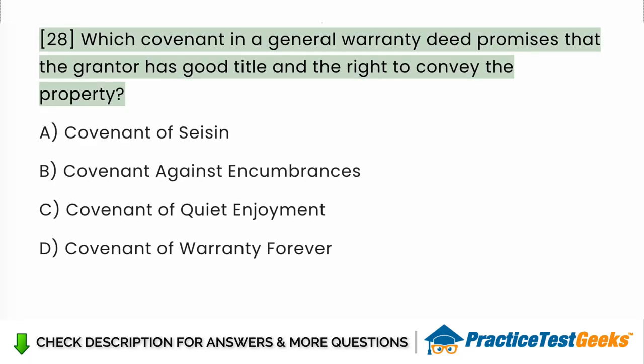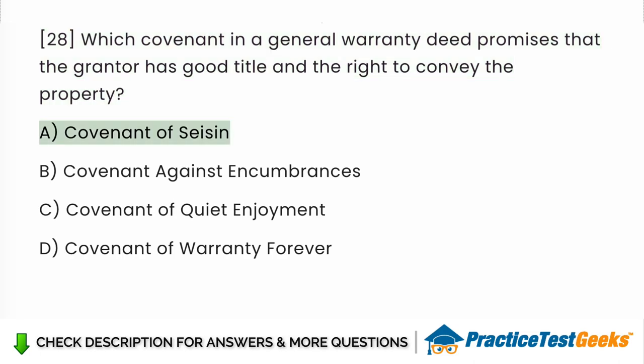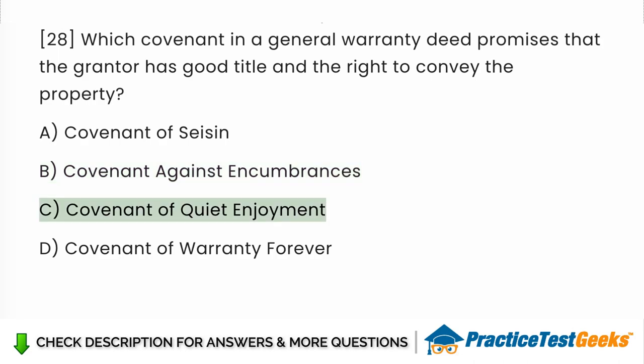Which covenant in a general warranty deed promises that the grantor has good title and the right to convey the property? a. Covenant of seisin. b. Covenant against encumbrances. c. Covenant of quiet enjoyment. d. Covenant of warranty forever.